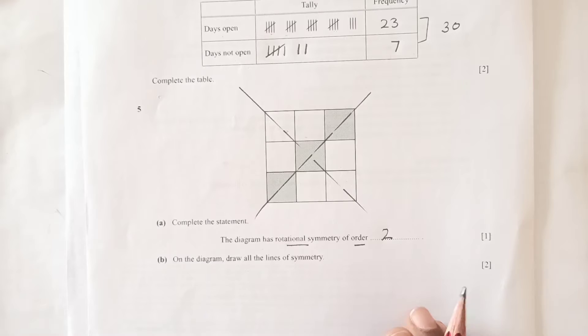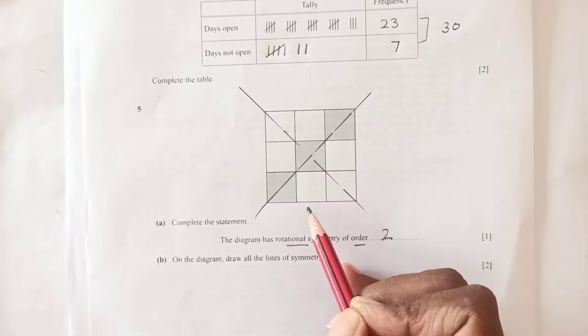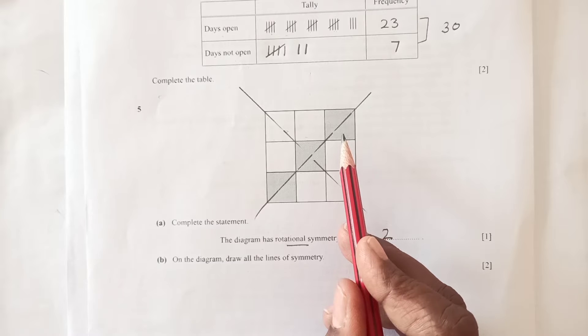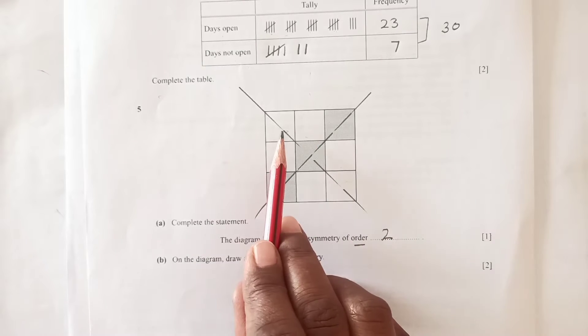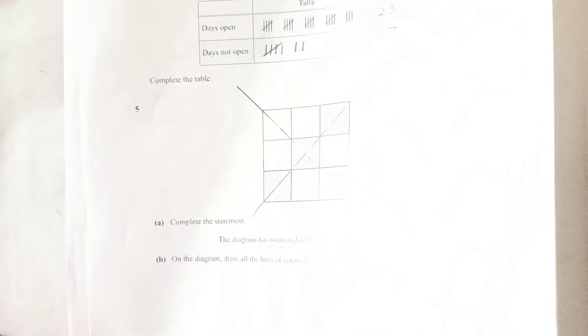So there are two lines of symmetry. A common mistake students do is they may write here, which is not true. When you do this, this box is shaded but this side is not shaded, so there are only two lines of symmetry.